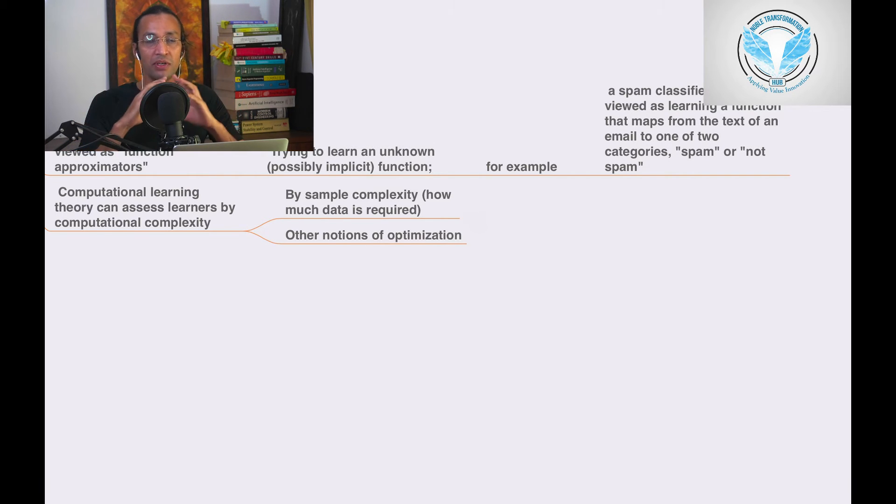It will get meaning out of data. For example, a spam classifier can be viewed as learning a function that maps from the text of an email to one of two categories: spam or not spam.